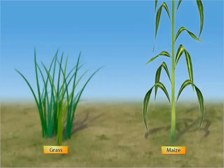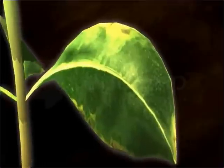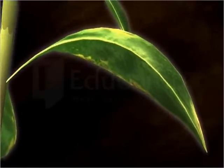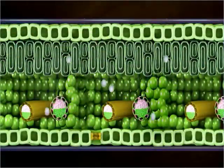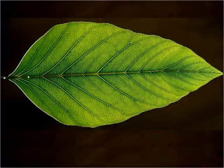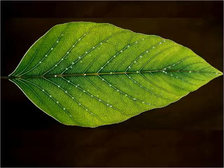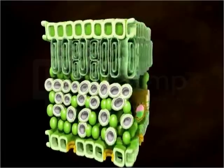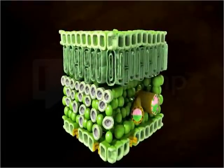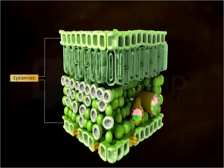This facilitates maximum exposure to light. In the leaves of some plants like grasses and maize, the petioles are absent; these leaves have long laminae. The leaf blade is usually thin and flat, reducing the distance through which molecules travel by diffusion. Every leaf has a branching network of tubes which transports water and mineral salts to all the cells, and the sugar products of photosynthesis are removed.